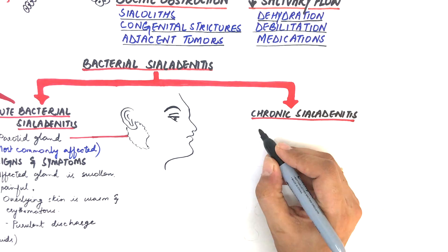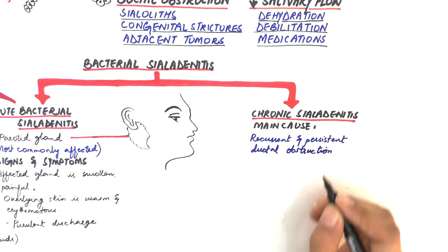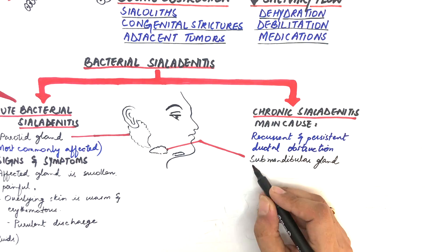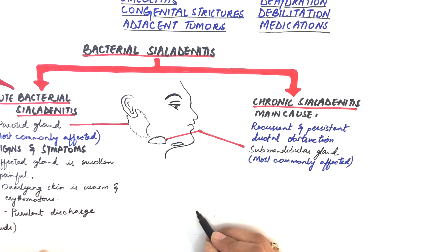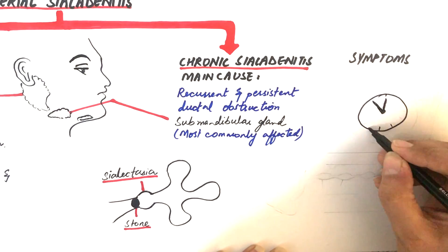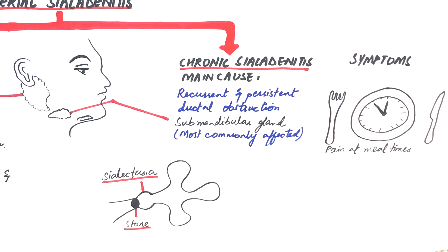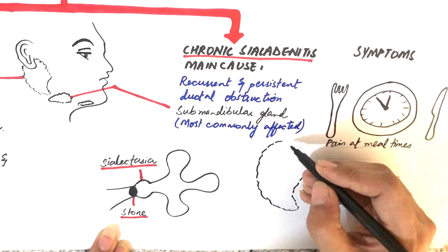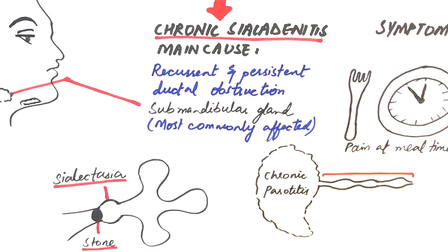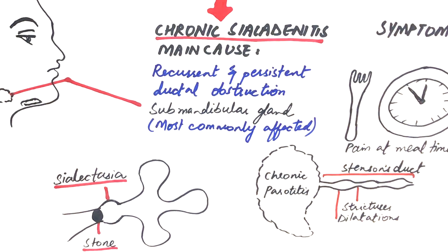Chronic sialadenitis can be caused by persistent or recurrent ductal obstruction by a sialolith. The gland most commonly affected is the submandibular gland. Sialography often shows sialectasia, which is ductal dilatation proximal to the obstructed zone. The patient experiences pain during meal times because this is when salivary flow is most stimulated. If the parotid gland is involved, it is called chronic parotitis. In chronic parotitis, the Stenson duct shows multiple zones of ductal dilatation and strictures, and this sialographic pattern is known as sausaging.